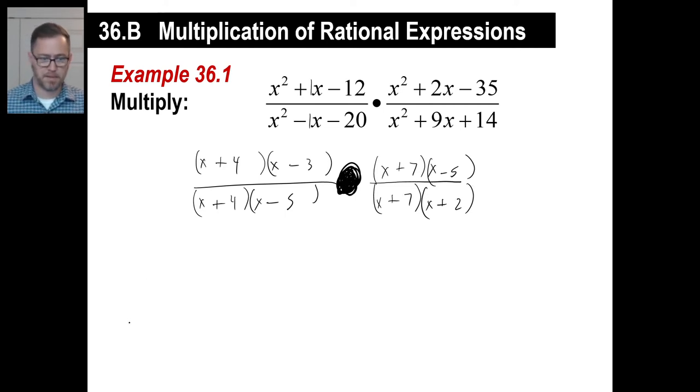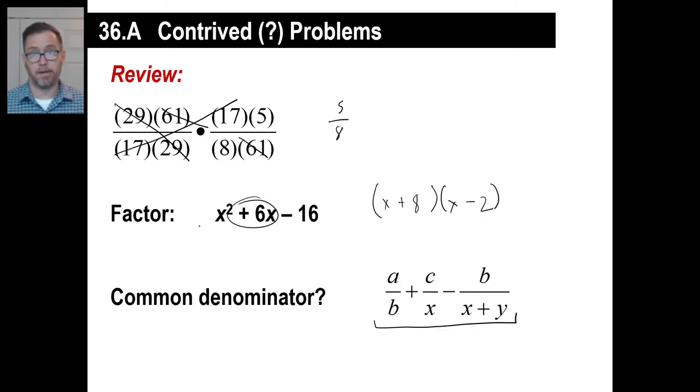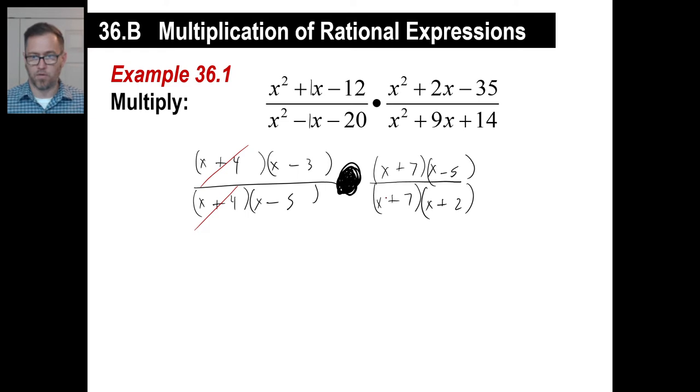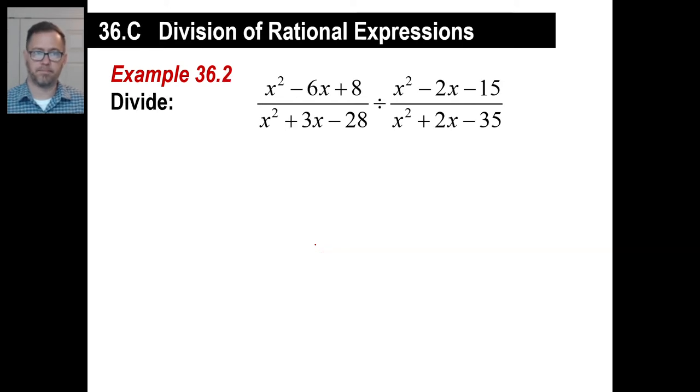Now what we can do to make this really easy. And we'll be done after this. It's just cancel. Look. X plus 4 on top. X plus 4 on bottom. Done. Over here. X plus 7. X plus 7. Done. X minus 5. X minus 5. Done. All I have is an X minus 3 on top and an X plus 2 on the bottom. Go to the next problem. It should take you about one minute.